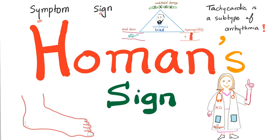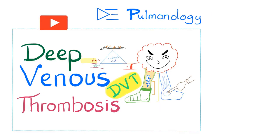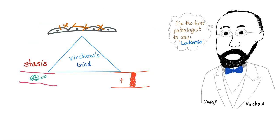Today we'll start with Hohmann sign. You may find this positive in cases of deep venous thrombosis, or DVT. I have a video about DVT in my Pulmonology playlist. Let's start with the basics. This is Rudolf Virchow, who described the famous Virchow's triad: endothelial damage, blood stasis, and hypercoagulability. These three factors increase your risk of thrombosis and clots.